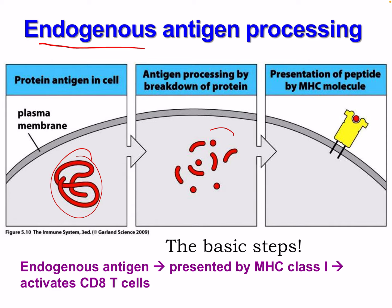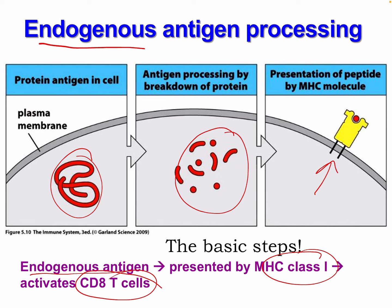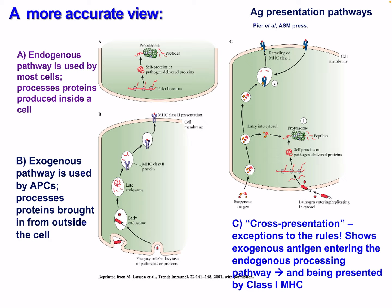Endogenous antigens are presented by class 1 MHC and activate CD8 T cells — that's something to remember. The endogenous pathway is used by most cells and processes proteins produced inside the cell, while the exogenous pathway is used by antigen-presenting cells and processes proteins brought in from outside the cell, like viruses.